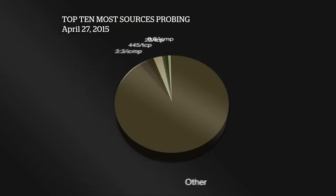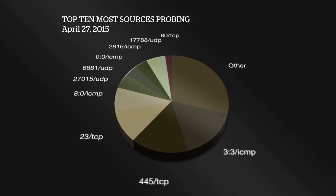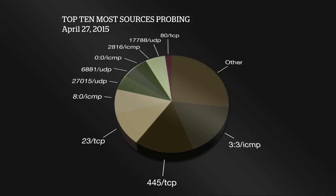The top 10 most sources doing the probing — not much movement. Port 445 is at the top, followed by port 23 TCP and 27015. Some of these are associated with peer-to-peer protocols, BitTorrent, and gaming. Port 17788 UDP has been a growing mystery we considered potentially innocuous — we'll investigate further. No updates on that at this point.